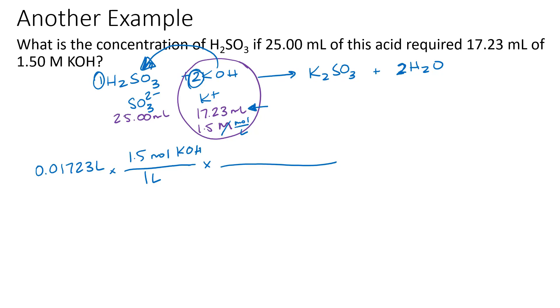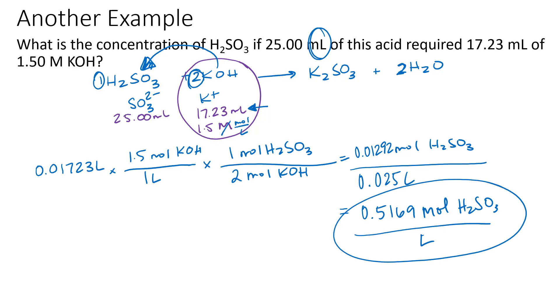I need to get to H2SO3 because I need the molarity of that. There's two moles of KOH per every single one mole of H2SO3, so that will give me moles of H2SO3. That gives me 0.01292, and then that will be divided by 0.025 liters because that's in milliliters. We have to move the decimal back three places, divide it by a thousand, and I get 0.5169 moles of H2SO3 per liter of solution. That's it.